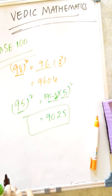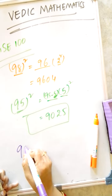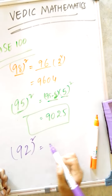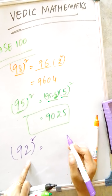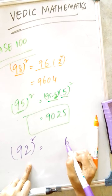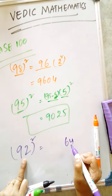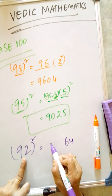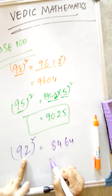Next example, 92 square. How much it is lesser from 100? 8 square is 64. Now, I am reducing 8 from 92. That is 84. So, the answer is 8464.